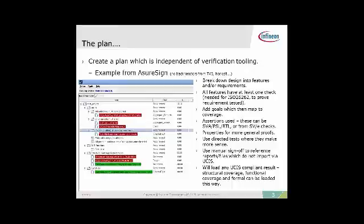You can map down to assertions to prove that something has been checked over a range of conditions. If you have a look at this slide set, you can see we've used properties, assertions, cross coverage, directed tests, toggle coverage — whatever you actually require. At this point you're trying to say what techniques you aim to use to test things; you may want to test with more than one technique. It's just a plan at this stage about how you're going to go about it.